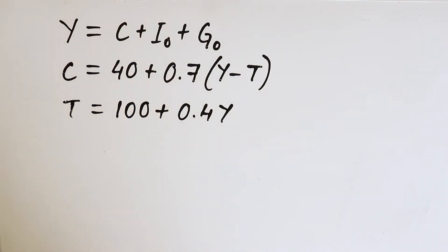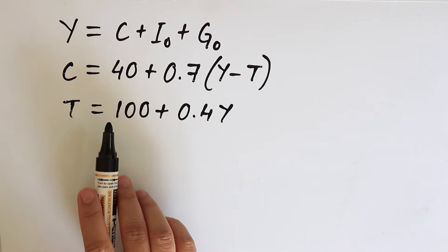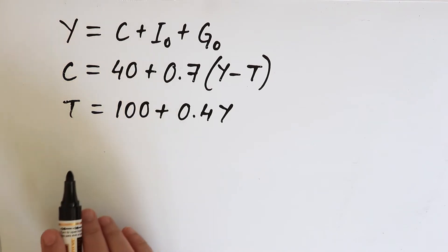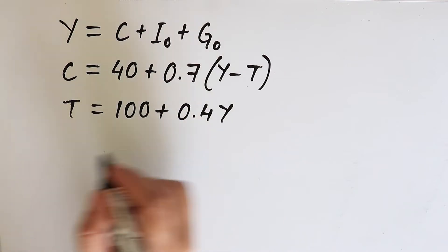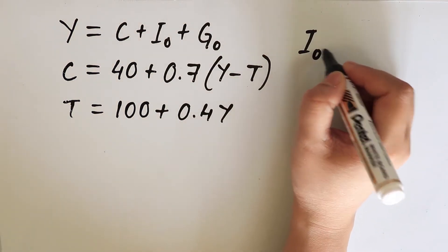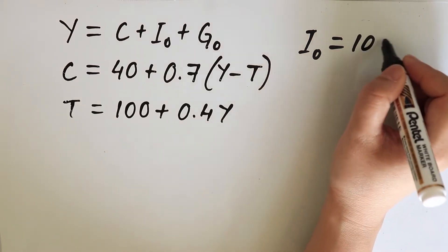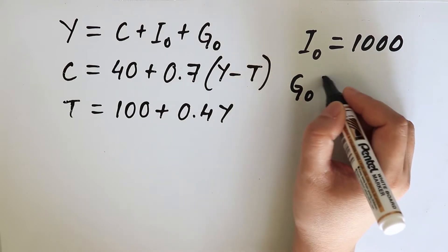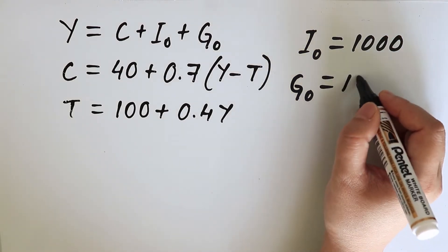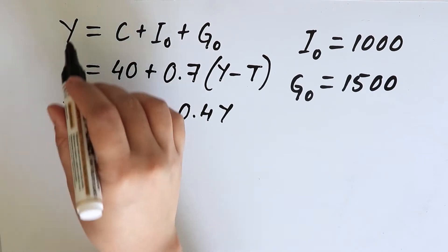Consider this national income model. We have three equations: Y as the income, C as the consumption, and T as the equation for tax. Let I0, the investment, be equal to 1000 and G0, which is the government expenditure, be equal to 1500. So what will be the equilibrium income?